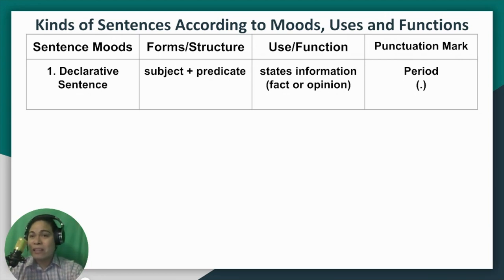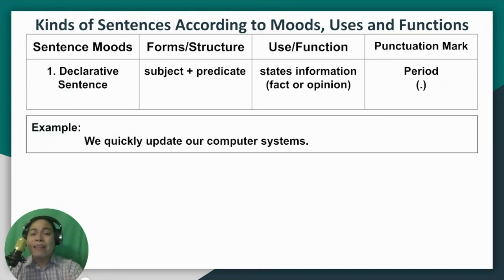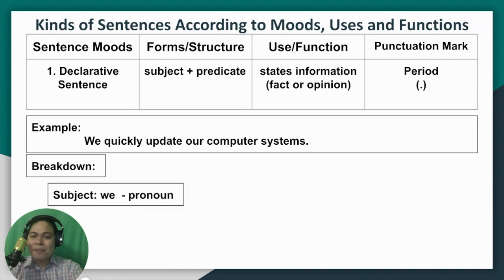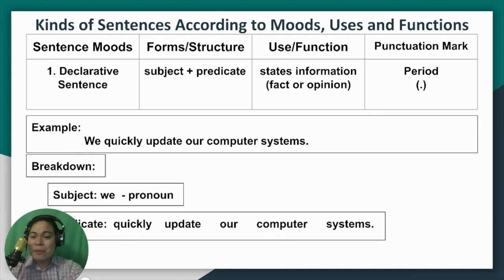The punctuation to use for declarative sentence is simply a period. Let's have the example: "We quickly update our computer systems." We have only six words for this sentence. Let's break it down. The subject is "we," which is a pronoun, since it doesn't say a specific name of a person. The predicate is "quickly update our computer systems" — those five words have different functions, and let us identify them.